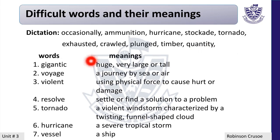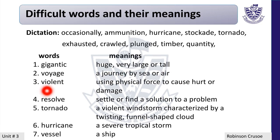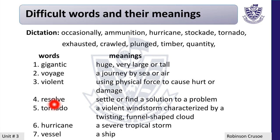Now I am going to explain words with their meanings. Gigantic means huge, very large or tall. Voyage means a journey by sea or air. Violent means using physical force to cause hurt or damage. Resolve means to settle or find a solution to a problem. Tornado means a violent windstorm characterized by a twisting funnel-shaped cloud. Hurricane means a severe tropical storm. And vessel means a ship.